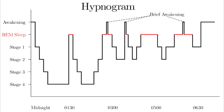What EEG waveform is observed in the awake stage but with eyes closed? When the eyes are closed but you're still awake, you observe the alpha waveform.